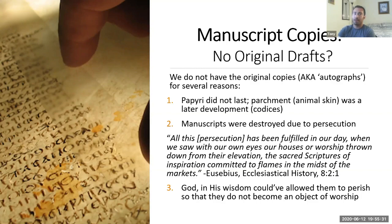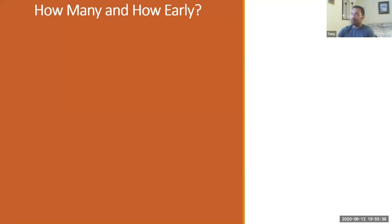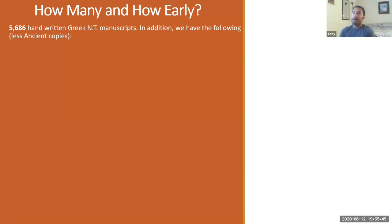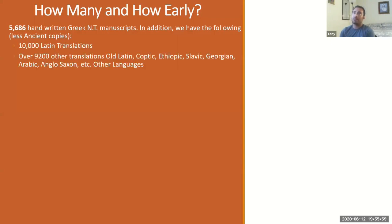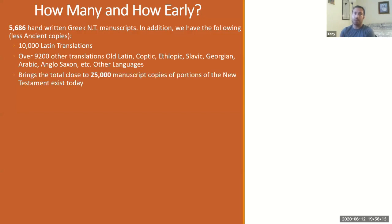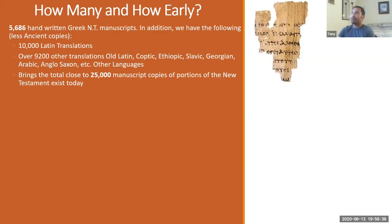So what do we have? As of ancient copies, we have about 5,700 handwritten Greek New Testament manuscripts. In addition, we have 10,000 Latin translations and about 9,200 other translations — Old Latin, Coptic, Ethiopian, Slavic, Georgian, and so forth — bringing us close to about 25,000 manuscript copies of the New Testament. The 5,700 are the most significant because the New Testament was originally written in Greek.